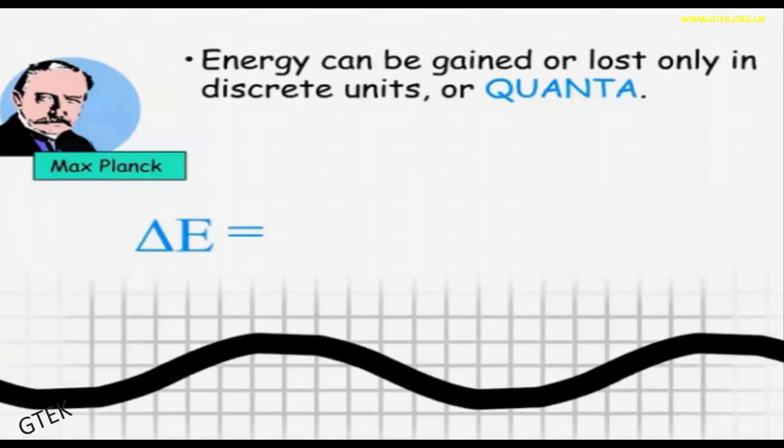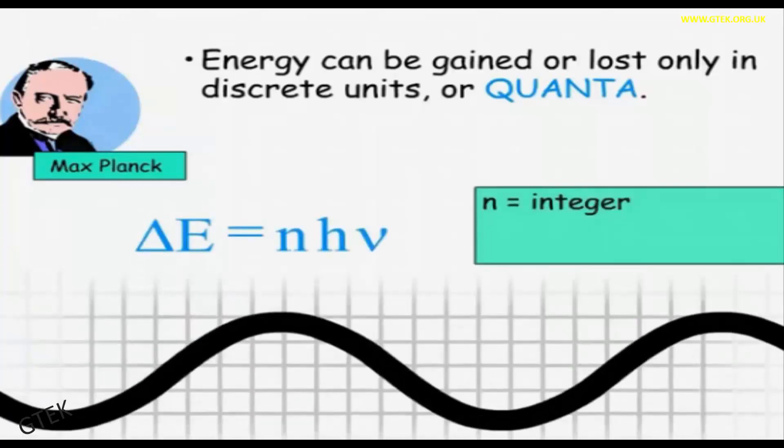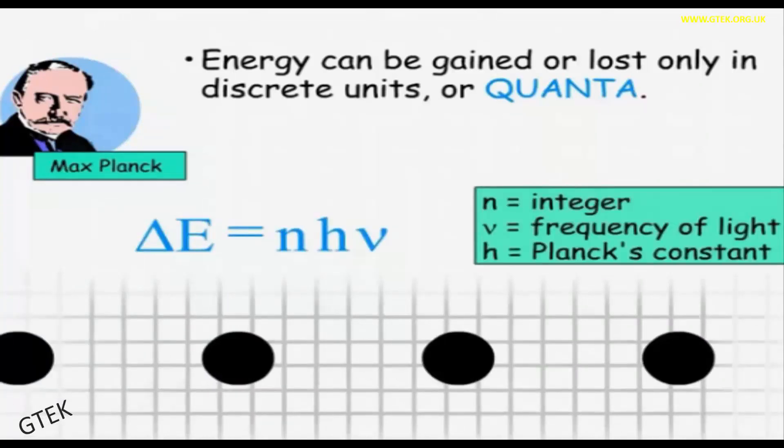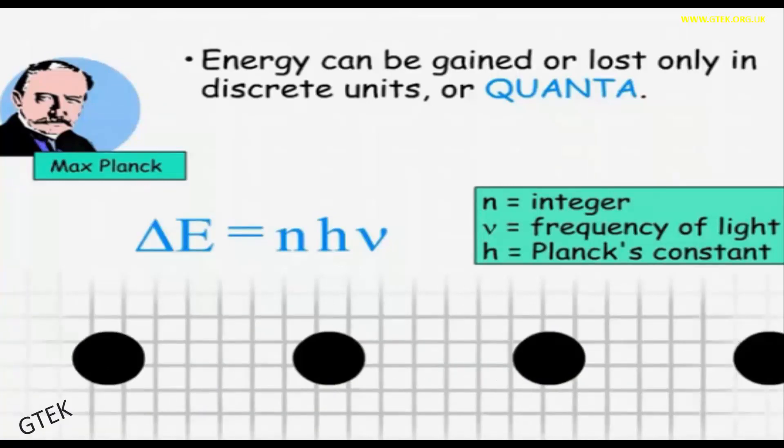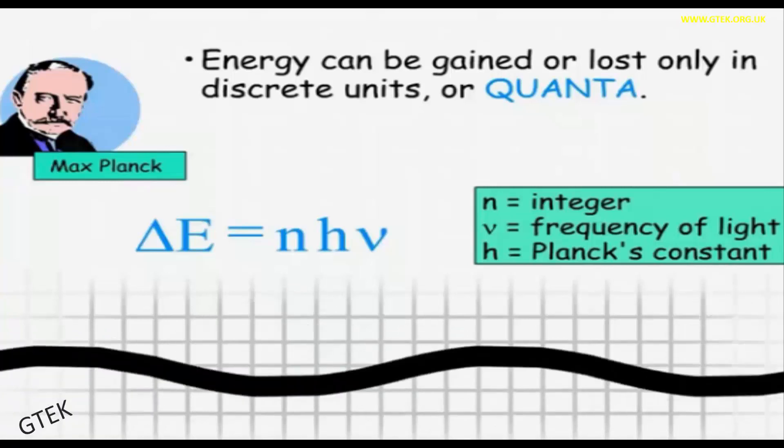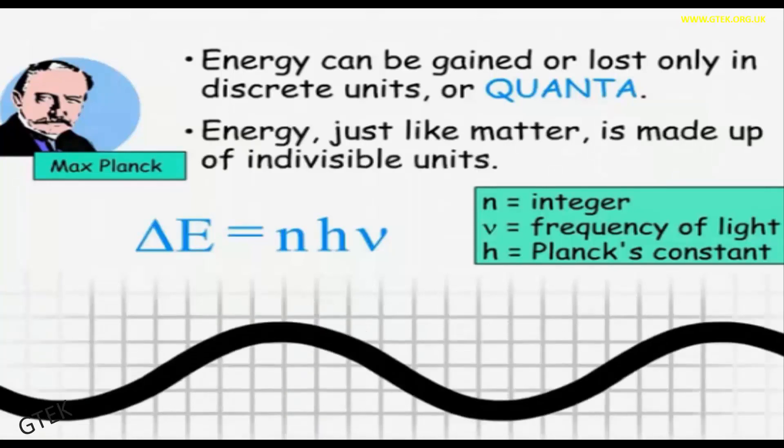Delta E equals nhν. N is considered to be integer, ν is considered to be the frequency of light, whereas h is the Planck's constant. Energy, just like matter, is made up of indivisible units.